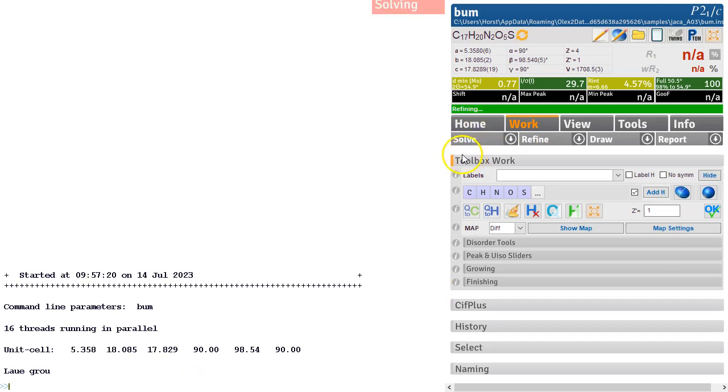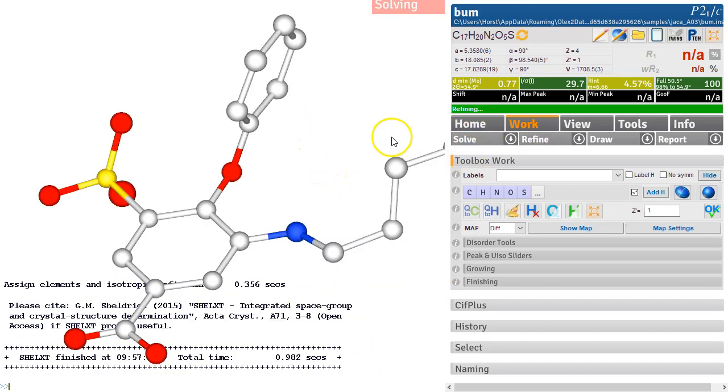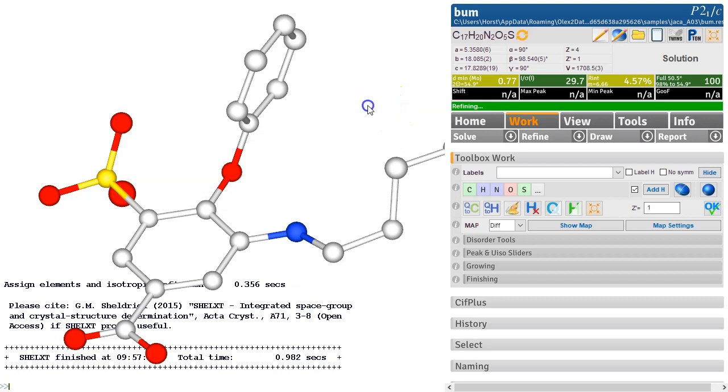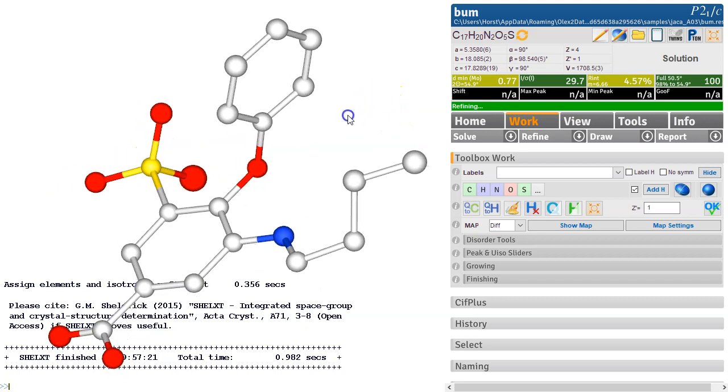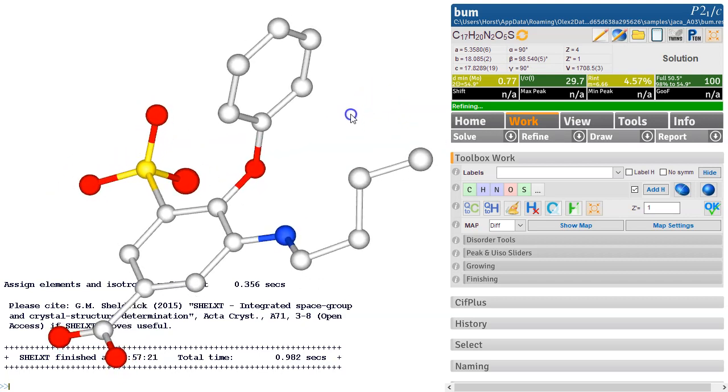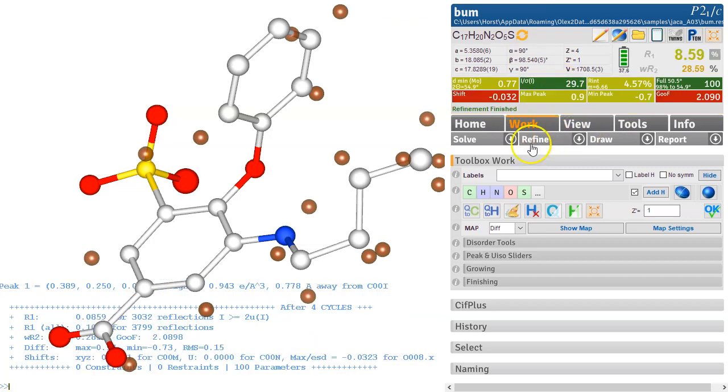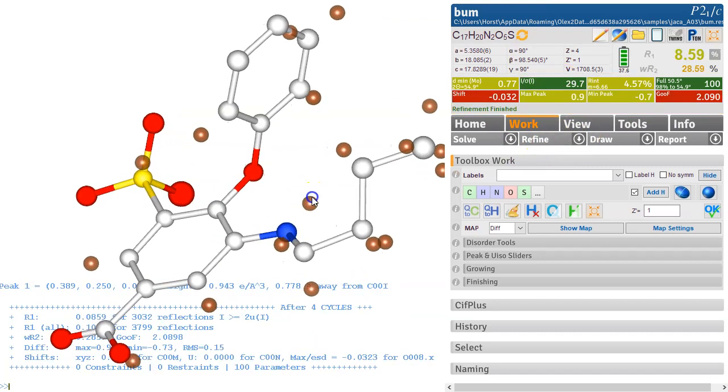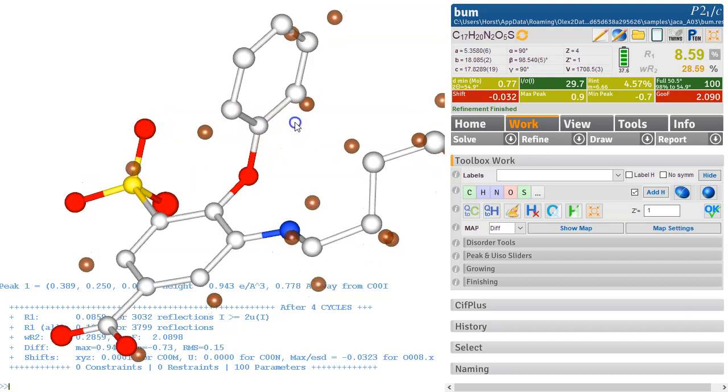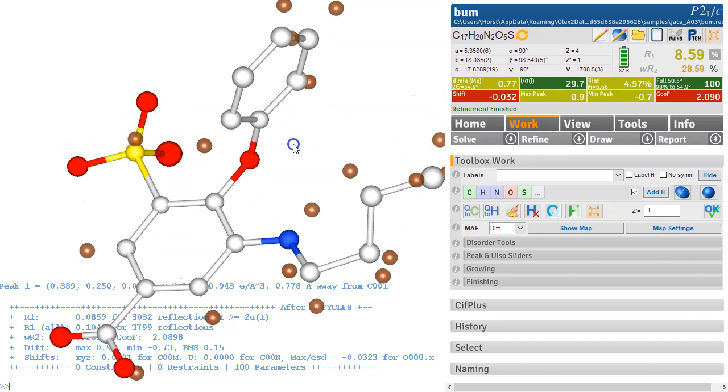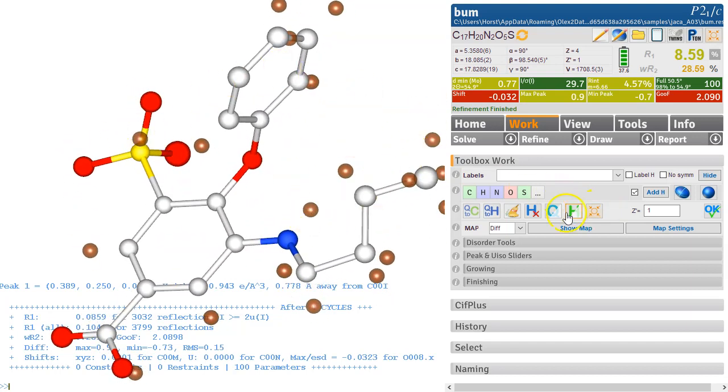I'm going to use ShellXT and it solves the structure pretty much straightforward. All the atoms have been found and atom types have been assigned. The first thing, type refine to see what happens, and we can also press that button of course. This all looks pretty good and we can already see all the hydrogen positions here. So all these Q peaks here, we can press them up, Control M.